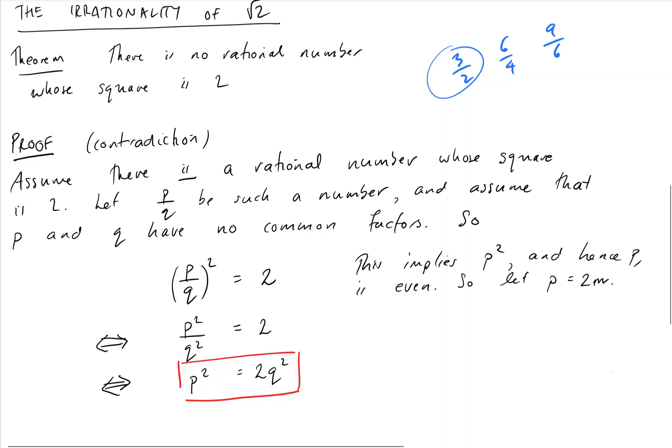What we'll do now is we'll substitute this back in. We get 2m squared is equal to 2q squared, which gives us 2m squared is equal to q squared. I'm just turning that 2 into a 4 and dividing through by 2, which implies q is even by exactly the same logic that p was even.